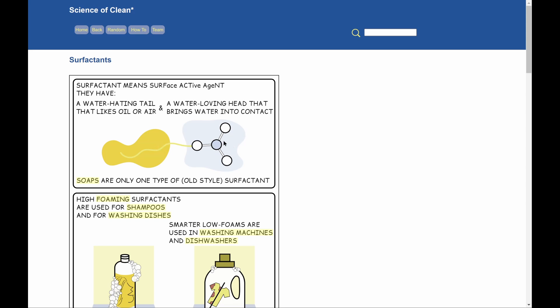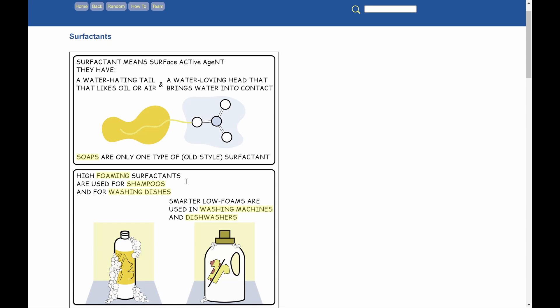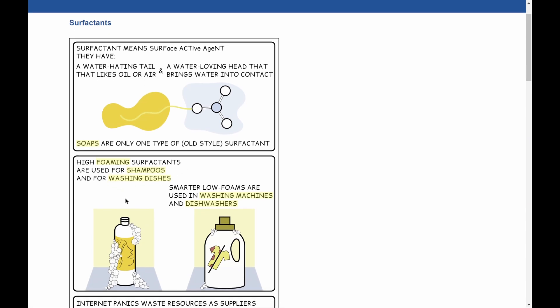And you already know one type of surfactant, soaps. They're an old style type. Now, all soaps are surfactants, but not all surfactants are soaps. And if you want to see whether soaps are good or bad, they're both, then click on the link. You can have high foaming surfactants for shampoos and washing dishes. You can have smarter low foams for washing machines and dishwashers.